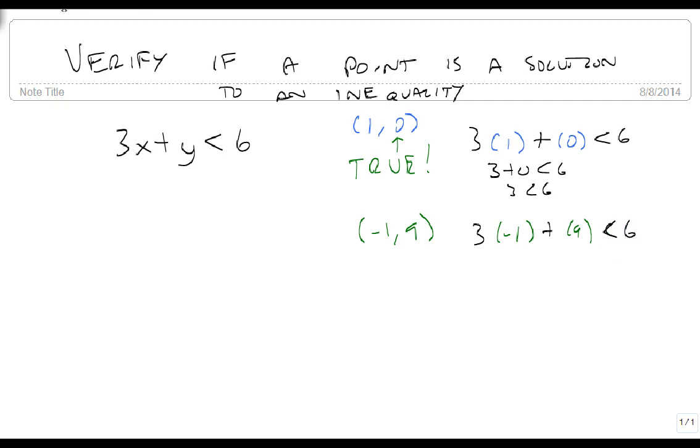This gives me negative 3 plus 9 is less than 6, which is 6 is less than 6, which is false. So this is not a solution.